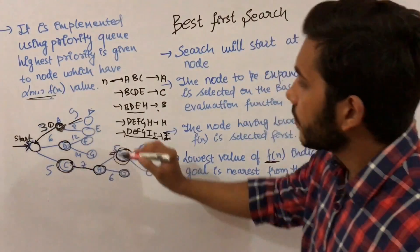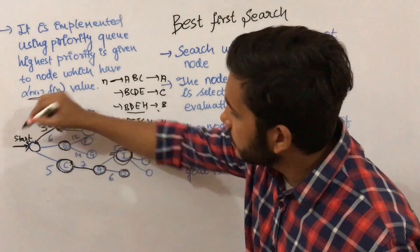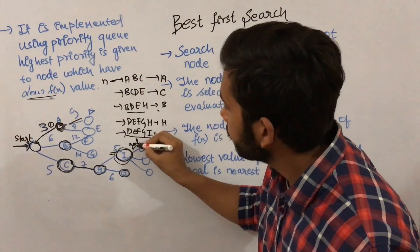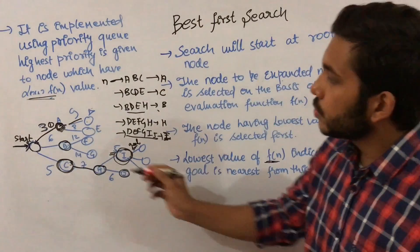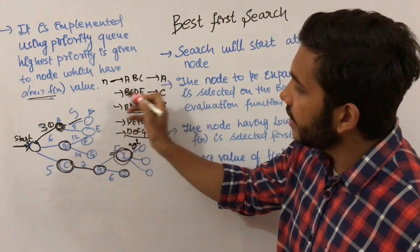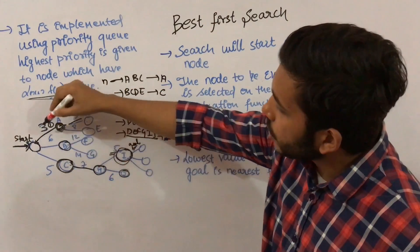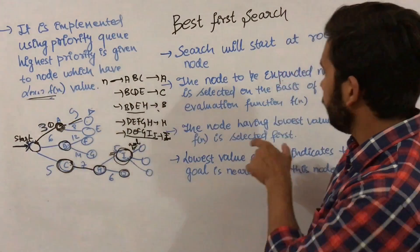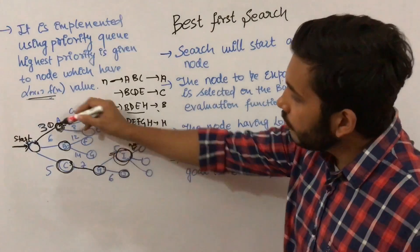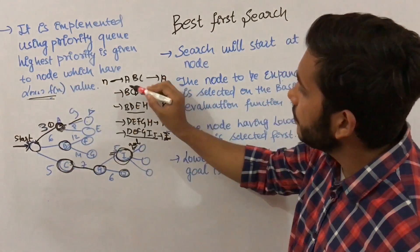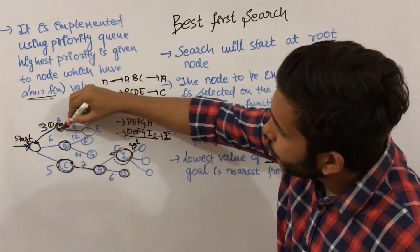Now let's look at an example. This is our start node and this is our goal node. From the start node, three nodes are available: A, B, and C, with estimated costs 3, 6, and 5 respectively. Since A has the lowest cost of 3, A is chosen first.